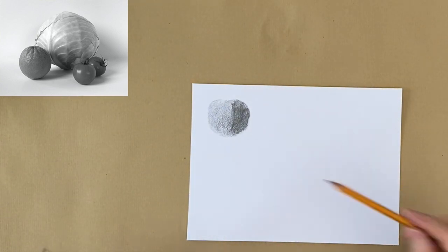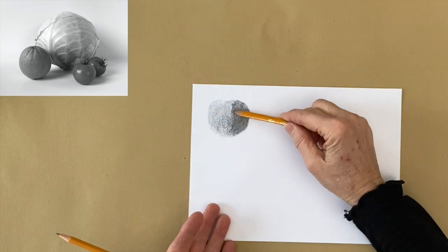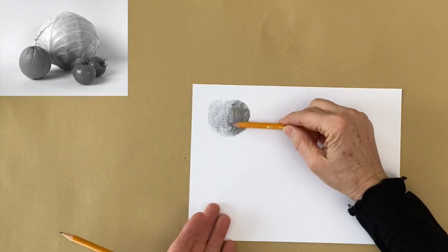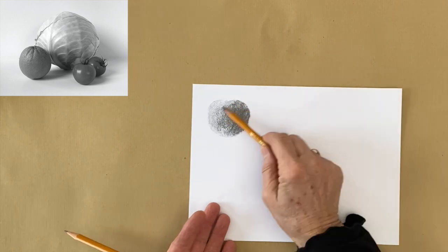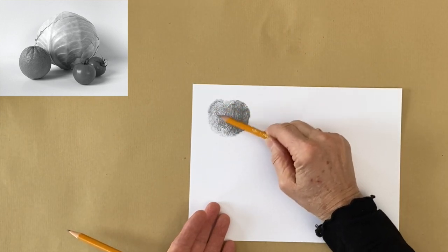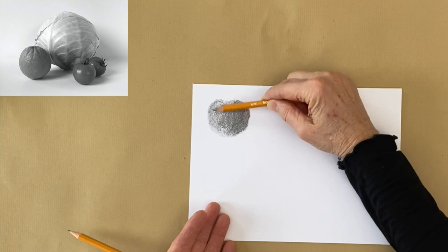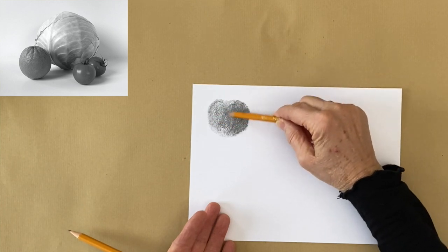Okay now with the tomato it's fairly easy because the surface is very smooth. There are no markings on the tomato. So this should be very easy to draw.